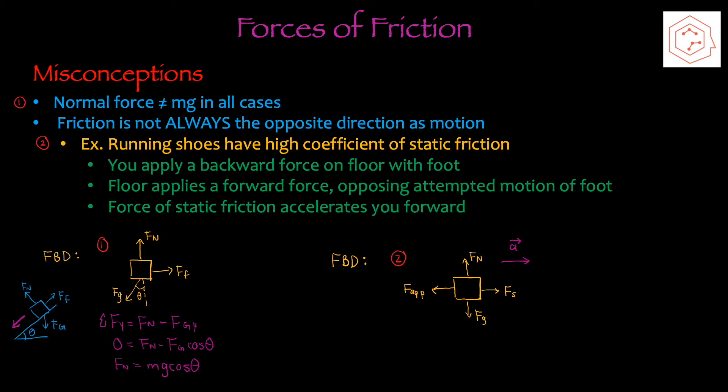Before going on to problem solving, we're going to go over some misconceptions with the force of friction. The first one is that the normal force isn't always equal to mg. For example, if your object is on an incline, the net force in the y component is zero, and it's equal to the normal force minus the gravitational force's y component. The y component of the gravitational force is related through cosine, since that's the adjacent side relative to theta. So the normal force in this case is mg cos theta.